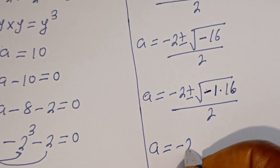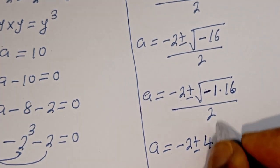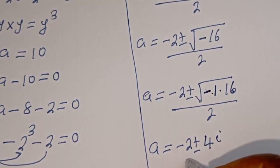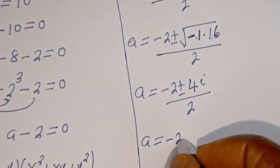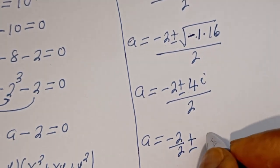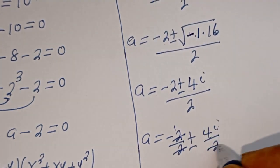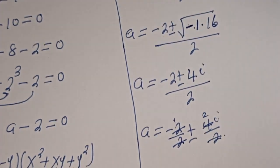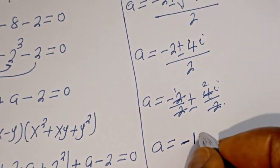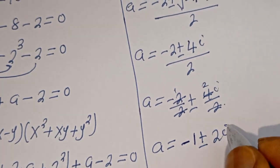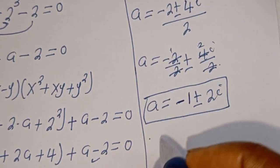A is equal to minus 2 plus or minus square root of 16 multiplied by square root of minus 1, divided by 2. Since square root of 16 is 4 and square root of minus 1 is i, we get A equals minus 2 plus or minus 4i, divided by 2, which simplifies to A equals minus 1 plus or minus 2i. Therefore these are the second and third values of A.